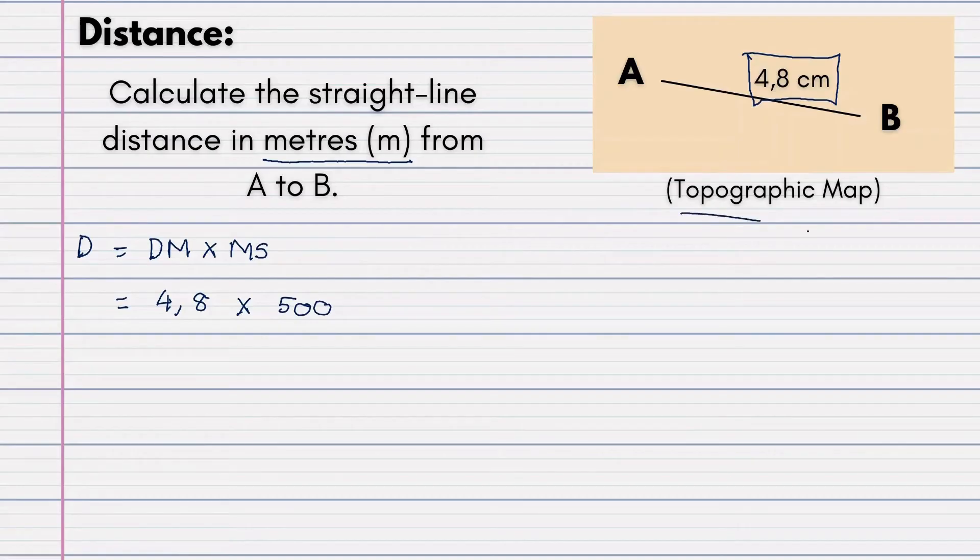Remember, topographic map meters will be by 500. So then for step three, we will have to write the answer with the correct unit. Remember, you have to include the unit. So this will give us 2,400 meters. Always remember to add the unit.